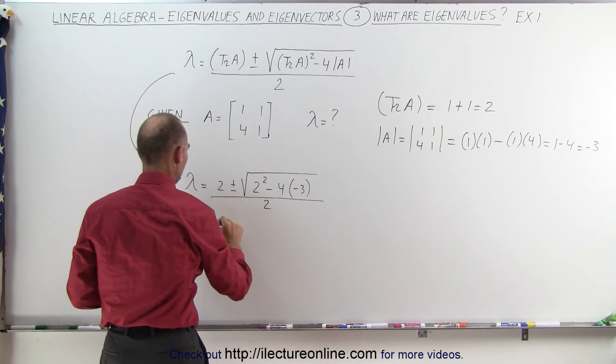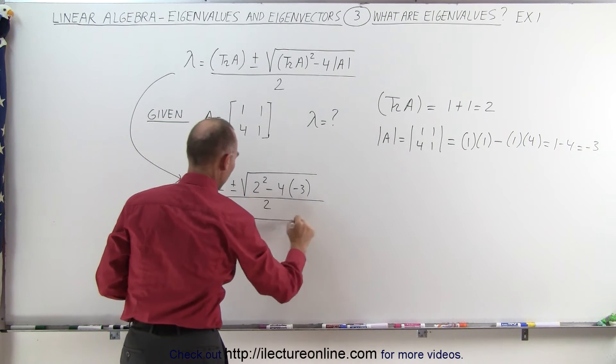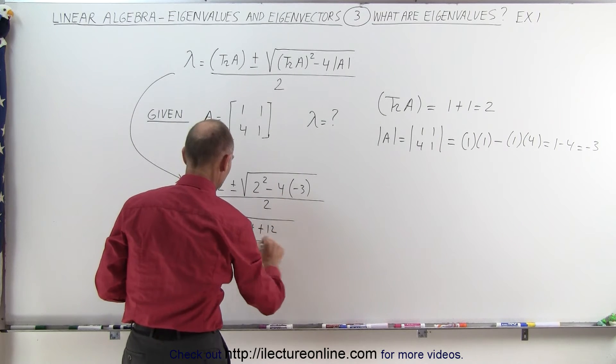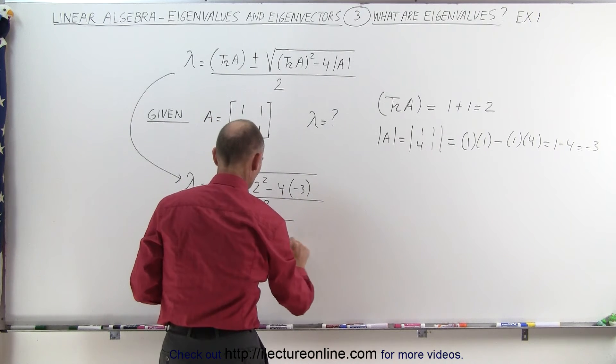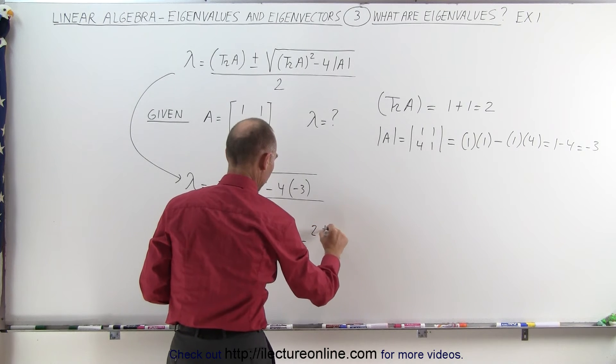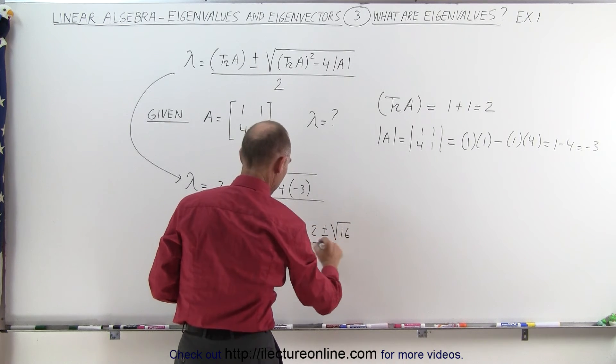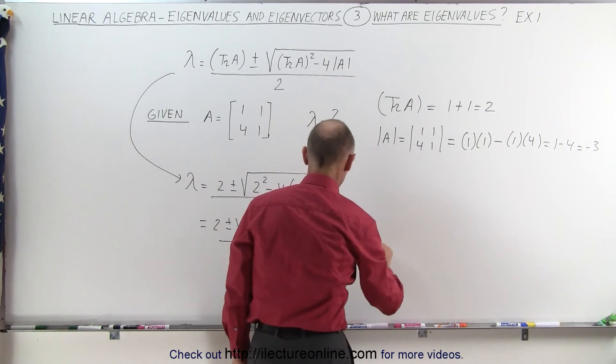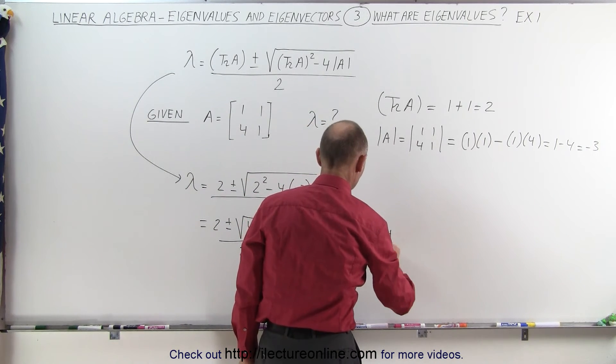This equals 2 plus or minus the square root of 4 plus 12, divided by 2, which is 2 plus or minus the square root of 16, divided by 2. The square root of 16 is 4, so that's equal to 2 plus or minus 4, divided by 2.